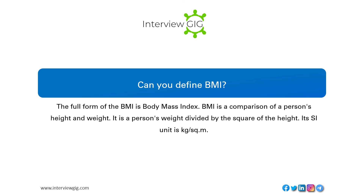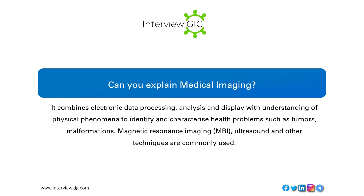BMI stands for Body Mass Index. It is a comparison of a person's height and weight — calculated as a person's weight divided by the square of their height. Its SI unit is kg/m².